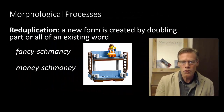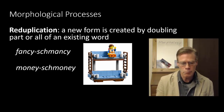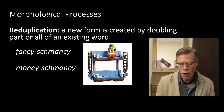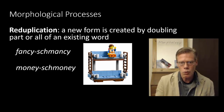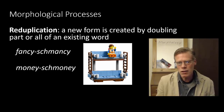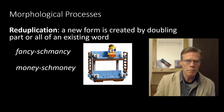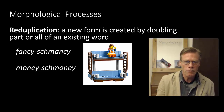Our next process is called reduplication, which is not a very common or productive process in English. Probably the most common example is when we want to belittle something — if you want to dismiss the notion of money, you'd say 'money schmoney.' It's much more common in other languages, and cross-linguistically it's a fairly common way of creating plurals by reduplicating part of the word.